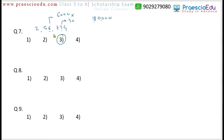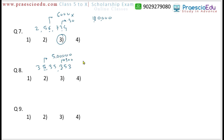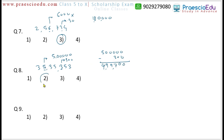Question number 8: What is the difference between the place values of the underlined digits in the number 35,353? The digit underlined at the lakhs place has place value 5,00,000. The digit underlined at the hundreds place has place value 300. Difference: 5,00,000 − 300 = 4,99,700. This is mentioned in option number 2, so option number 2 is the correct one.